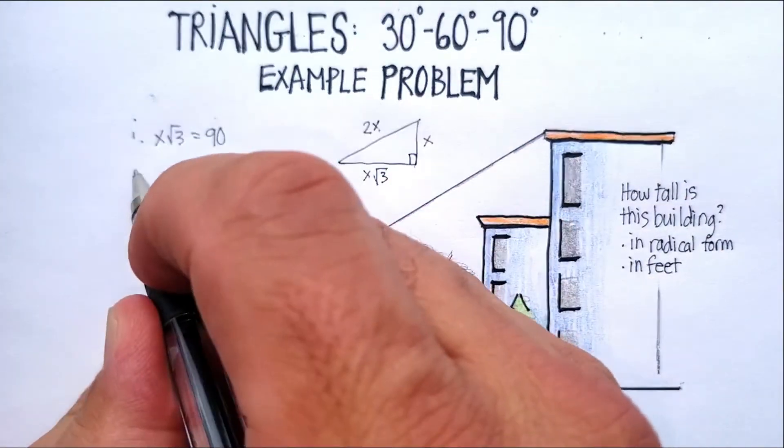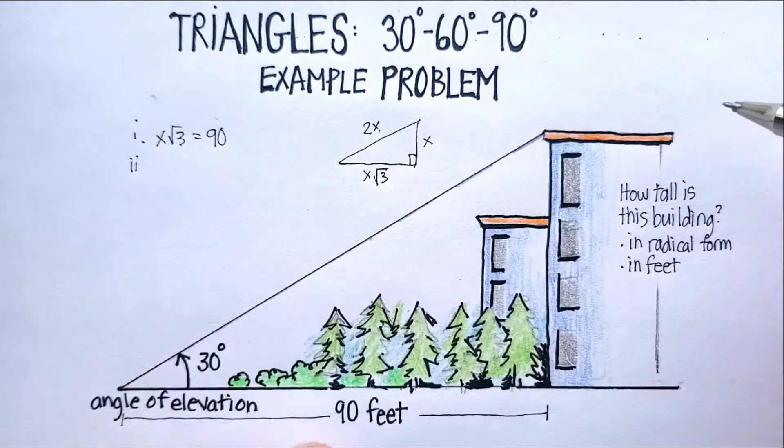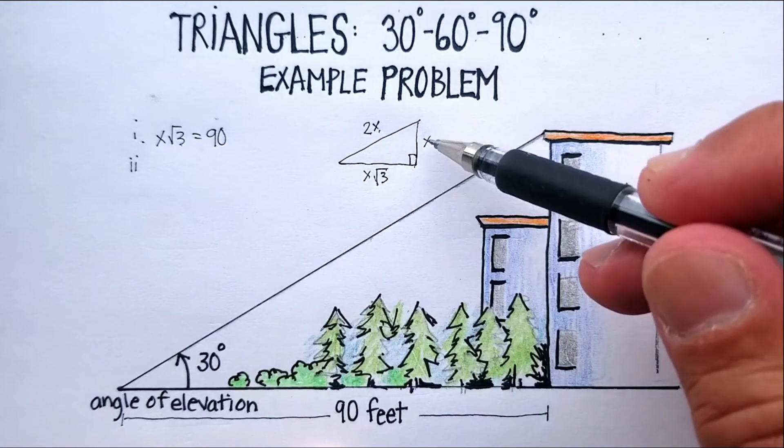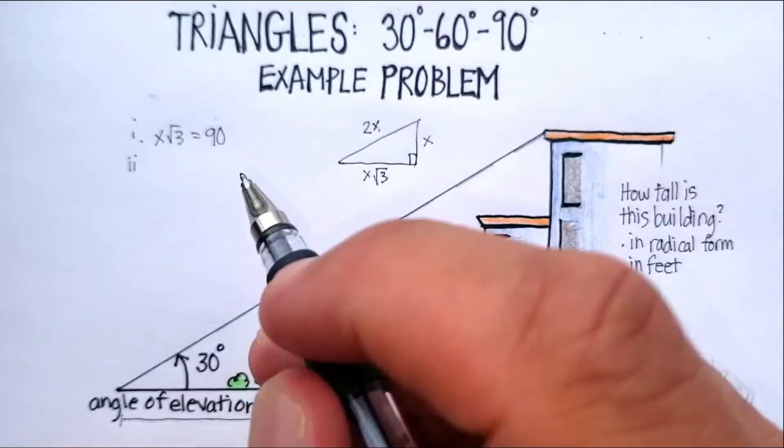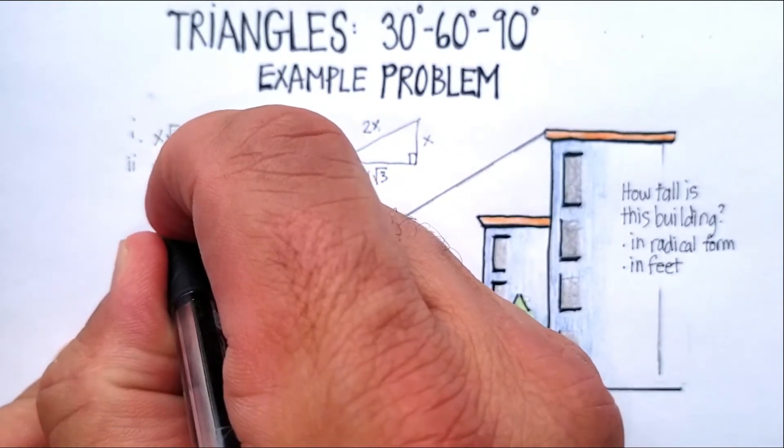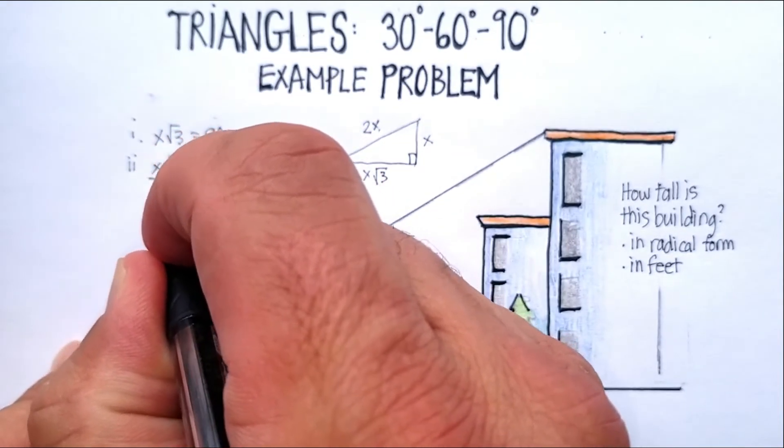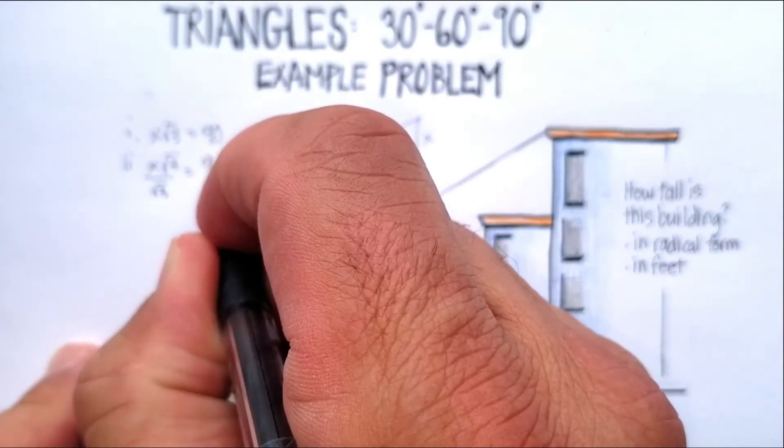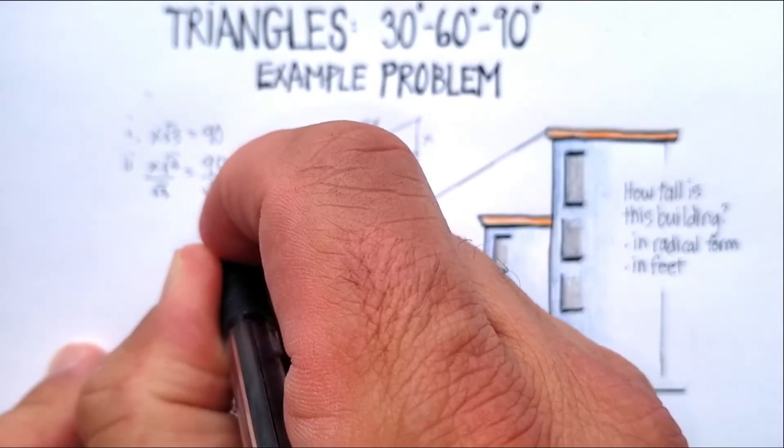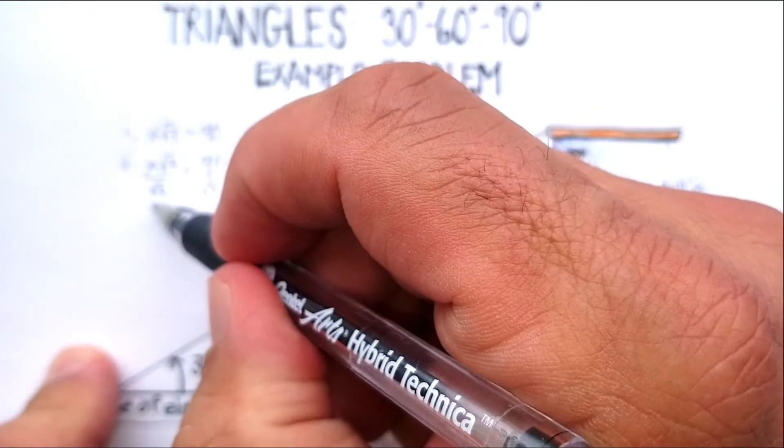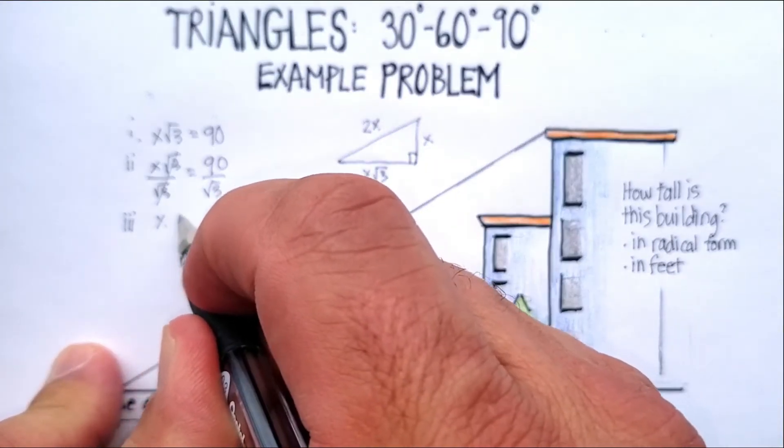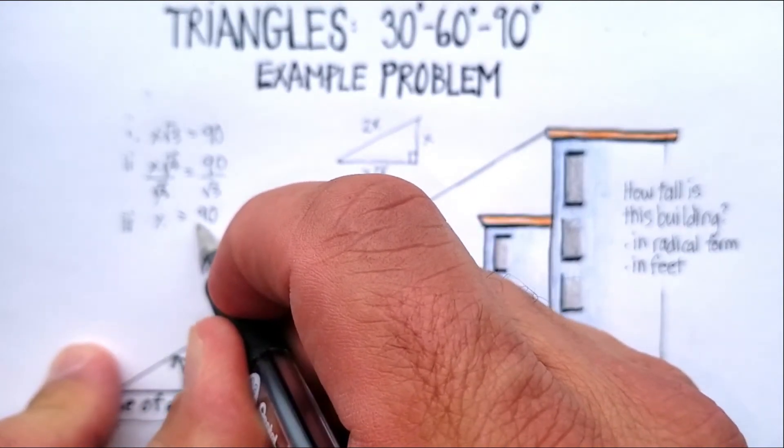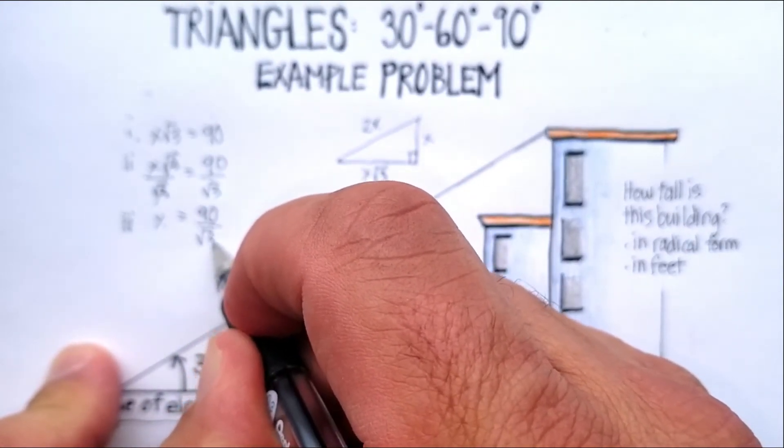Now, as in most things, we're solving for the x, because the x in this case would be the height of our building, if we just use this example. So the x would be the height of the building. So let's solve for x. We're going to divide both sides by √3, which makes this disappear. In my third step, I know that x is going to be equal to 90 divided by √3.